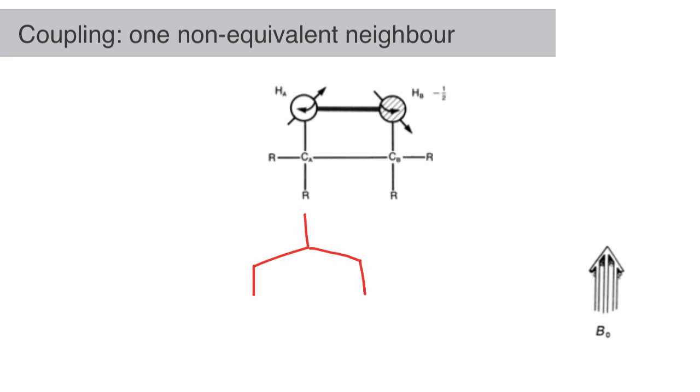All these situations add together to make two peaks, or a doublet, with relative peak intensity of 1:1 because there's equal probability of each situation. The magnitude of that coupling is called the coupling constant, J.